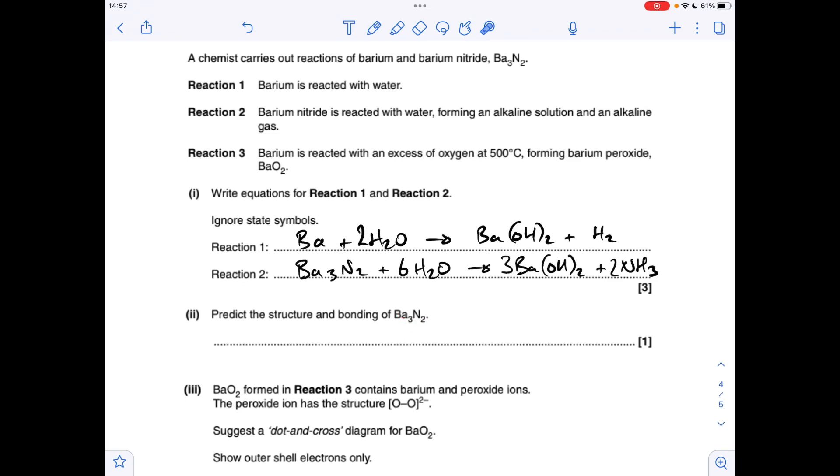Structure and bonding in barium nitride, well, we've got a metal and a non-metal, so it's going to be ionic. So in terms of structure, it'll be a giant ionic lattice.